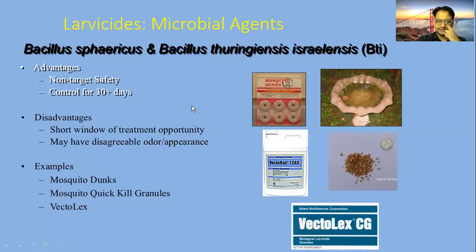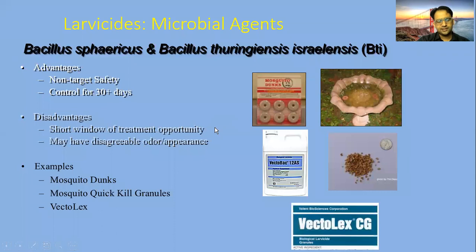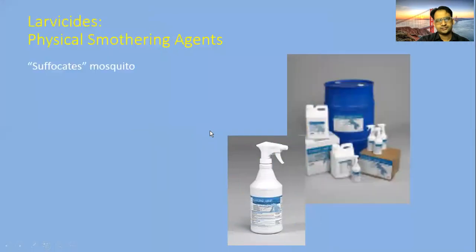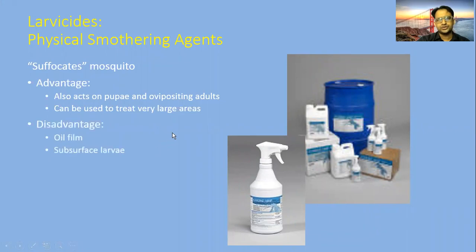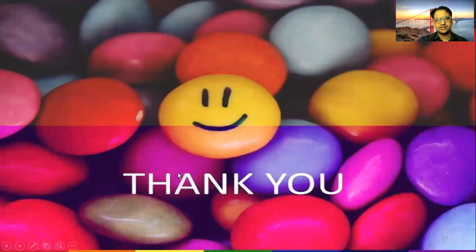Advantages of biological control include non-target safety and residual activity of 30-plus days. Disadvantages include a short window of treatment opportunity and potentially disagreeable odor or appearance. Examples include mosquito dunks, mosquito quick kill granules, and VectoBac. Physical smothering agents act as suffocants and can be used to treat very large areas using oil film surface walling. Examples include Golden Bear and BVA oils.